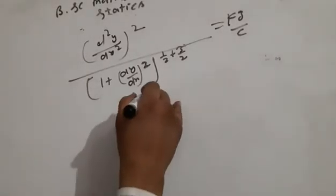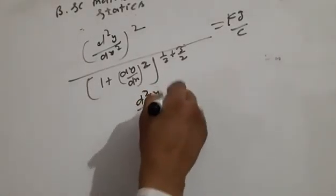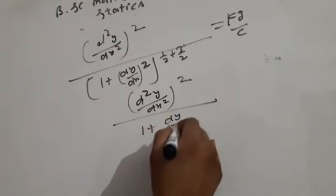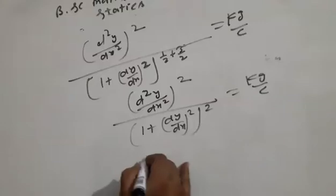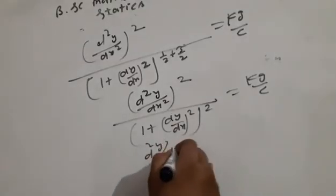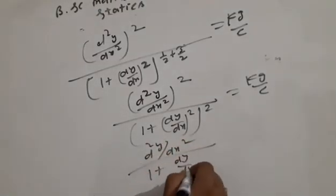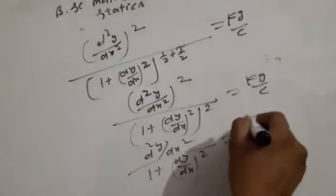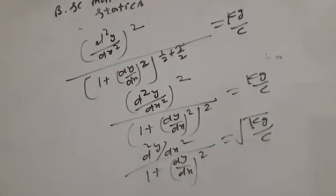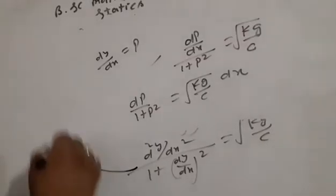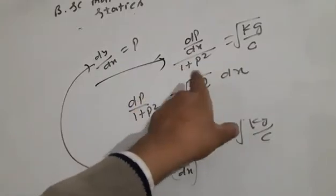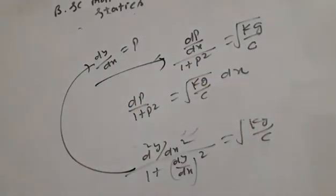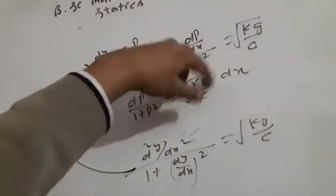So d²y/dx² divided by (1 + (dy/dx)²)^(3/2) on the next line becomes d²y/dx² divided by (1 + (dy/dx)²)^2 equals square root of kg/c. Substituting d²y/dx equals p, we get dp/dx divided by (1 + p²) equals square root of kg/c times dx.